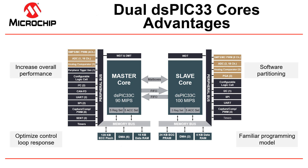A dual-core DSPIC offers increased performance compared to a single core in an application. One of the cores can be dedicated for control loop execution to optimize responsiveness. A dual-core enables the software design for an application to be partitioned between the cores in a way to allow independent development and seamless integration. The DSPIC C core maintains a familiar program model with all of the other DSPIC family of digital signal controllers.